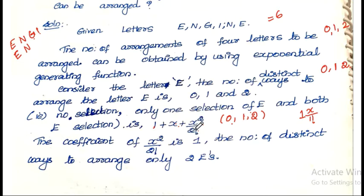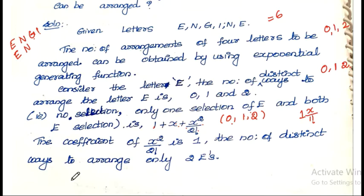The coefficient of x-squared by 2 is 1. So the number of distinct ways to arrange E — including both selections — is given by the coefficient of x-squared by 2 factorial, which we consider for E.